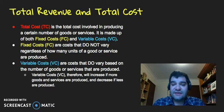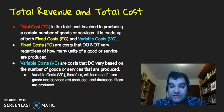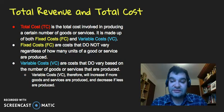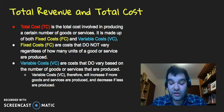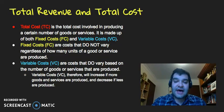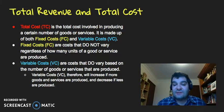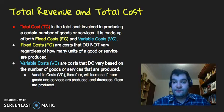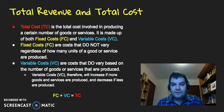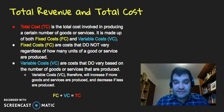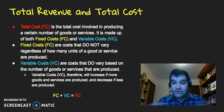Variable costs (VC) are costs that do vary based on the number of goods or services produced. If you produce one t-shirt, the price of electricity to run a machine is going to be a lot less than if you were producing a thousand t-shirts, because you'd need to run that machine for a lot longer. Same with employees — if you're paying employees on an hourly basis and it takes one hour to make ten tennis rackets, making a million rackets means a lot more man hours, increasing the cost of human resources. So: fixed costs plus variable costs gives you the total cost (TC).